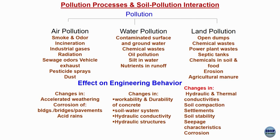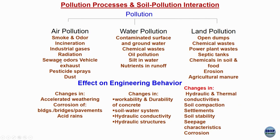Moving on to the scenarios discussed — when we talk about pollution and soil pollution interaction, pollution is a general word. One attribute of pollution is a contaminant; when it exceeds the permissible limit, this becomes a critical issue. We talk about air pollution, water pollution, and land pollution. Air pollution examples include smoke, odour, incineration when burning waste, industrial gases released into the environment, radiations from different activities, sewage, vehicle exhaust, pesticide sprays, and dust of different types.